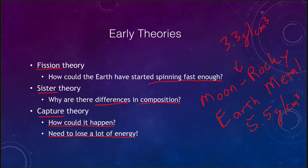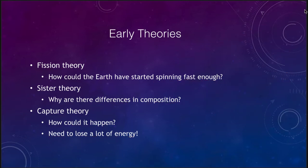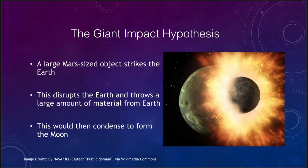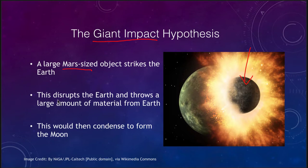That leads us to our current theory: what we call the giant impact hypothesis. What we hypothesize is that a large object, maybe about the size of Mars, crashed into the very early Earth. As the Earth was forming four and a half billion years ago and was still collecting planetesimals, there was a massive impact. This Mars-sized object struck the Earth, disrupted it, and threw a lot of material into orbit around the Earth, which then condensed to form the moon.